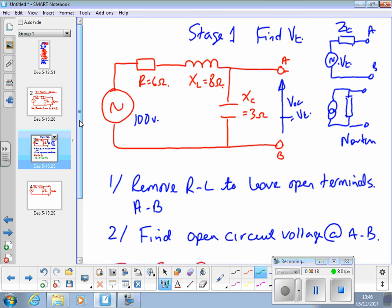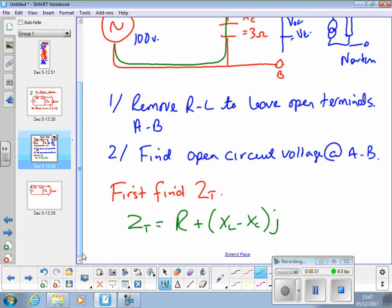Once the current has been removed, there's only one path for current. Through there, through there, down through the capacitor, back to there. It's a series circuit. So I've added the resistance, the reactants together in complex form. That's what I'm now going to do.